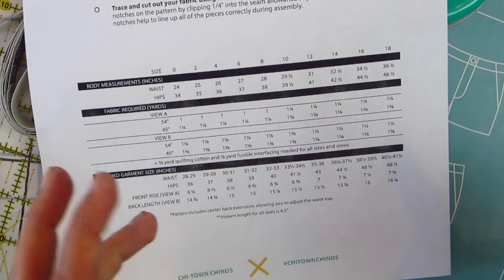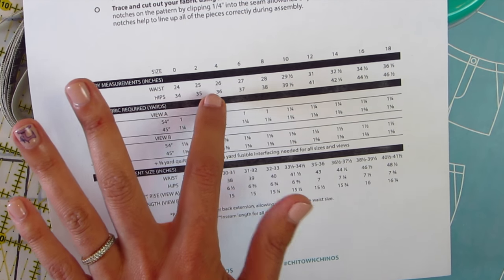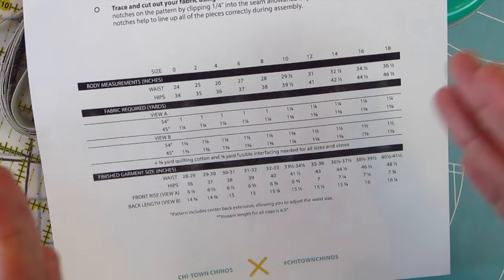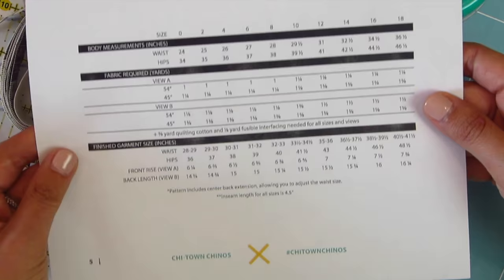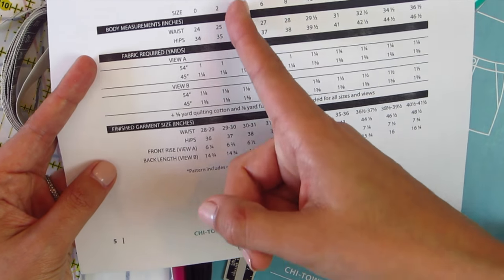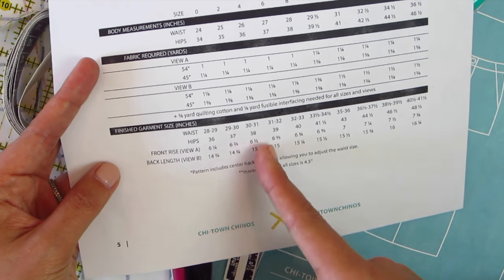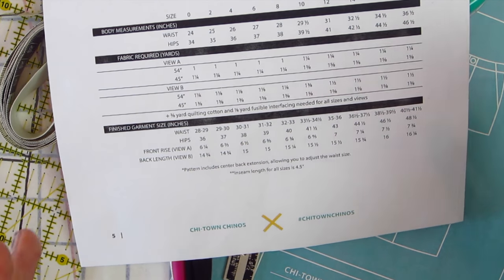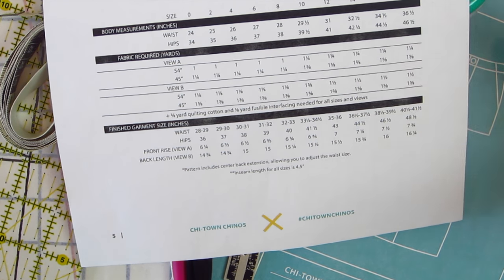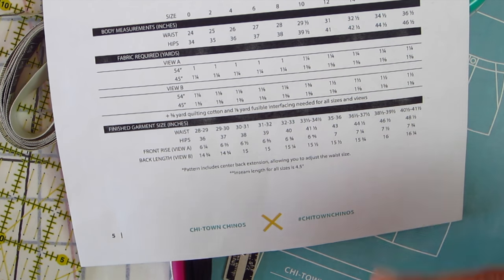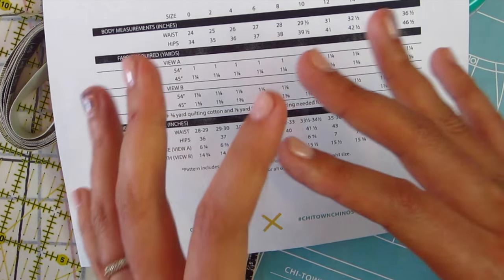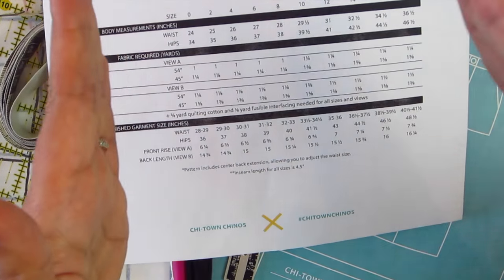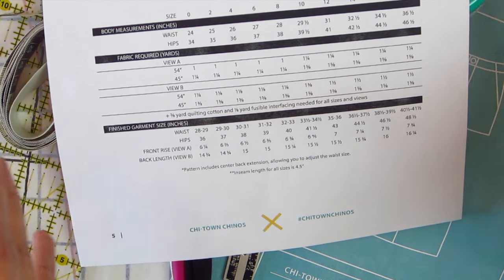So based on measuring Abby at her true waist, we are going to put her at a four and then to determine how much you need to add for your full seat adjustment, we go down to the finished garment sizes. So we're in a four all the way down. And you can see that the hip, the finished hip measurement is 38 inches. And when we measured Abby at her widest point, we got a measurement of 39. So we need to add one inch to her hip on the skirt by adding in three-dimensionally just to the back pattern piece.